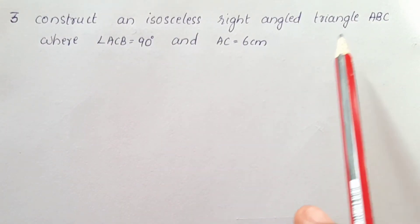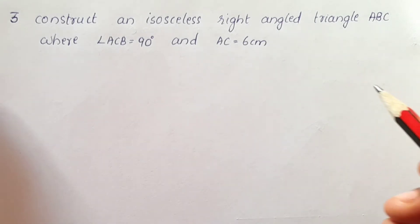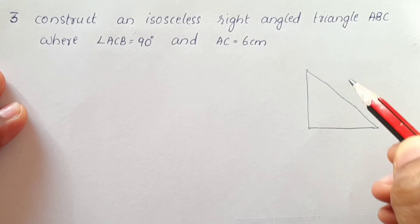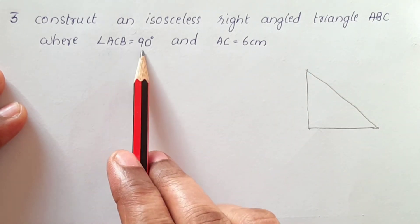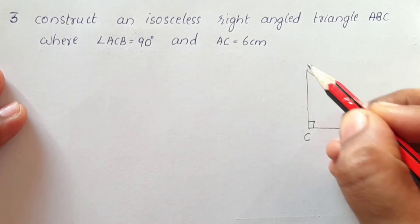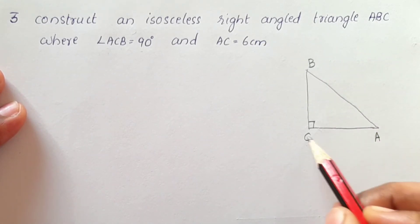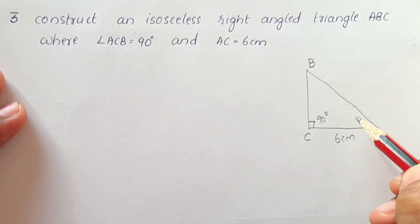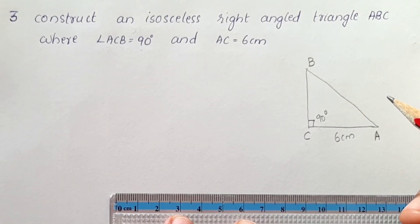Third question: construct an isosceles right-angle triangle ABC where angle ACB is equal to 90 degrees and AC is equal to 6 cm. This is a rough diagram. AC is equal to 6 cm and angle ACB is equal to 90 degrees. This is A, B and C.